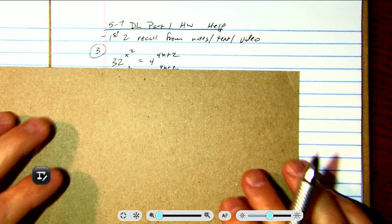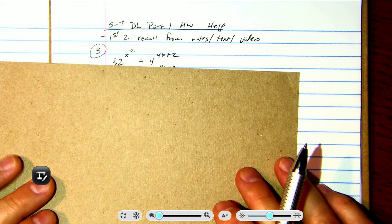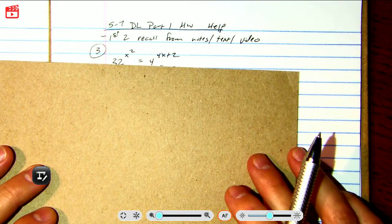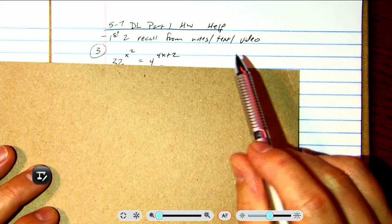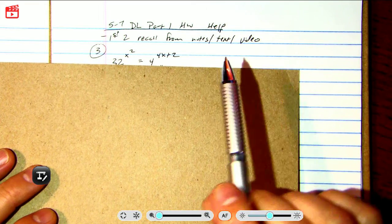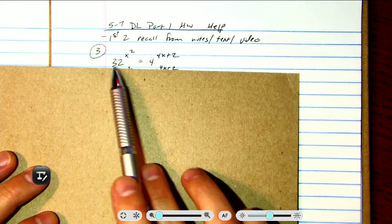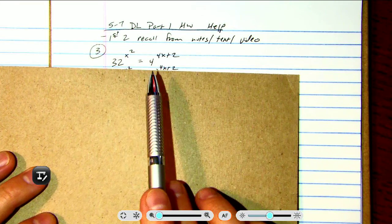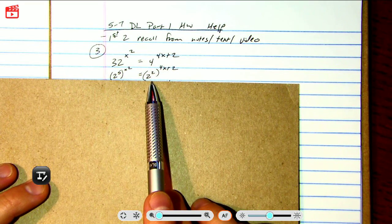Okay, here's some homework help, a real quick video for questions 5-7 in the distance learning part 1 homework. The first two questions you need to read and understand from recalling from the notes. The third question has both bases that need to be reduced down to a power of 2 like that.